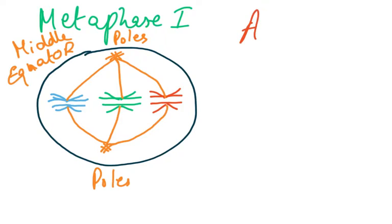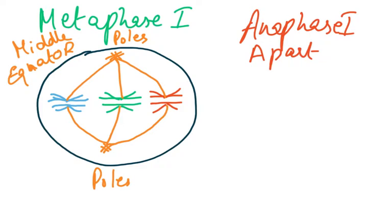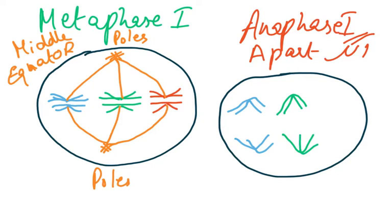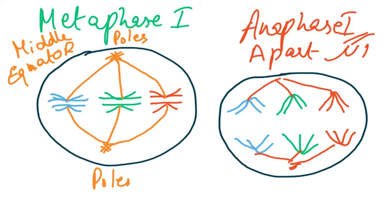This leads to the next phase which is anaphase 1. In anaphase 1, they're going to go apart — they're going to move apart. The blue and its copy go to one side; the other blue and its copy go to the other side. Similarly, the green and its copy go to one side, and the red and its copy to the other. All of these are going to move to the poles of the cell.